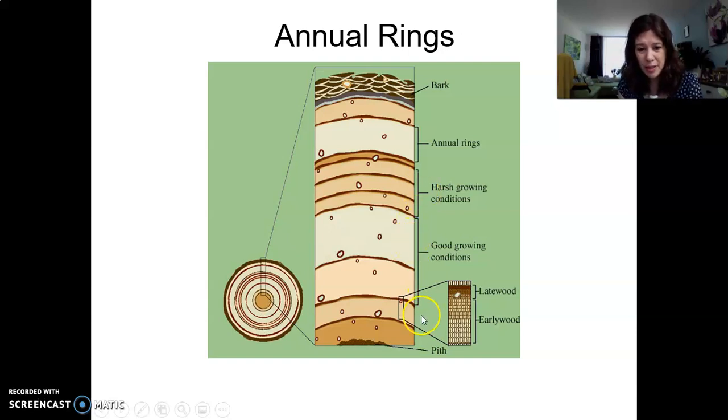So one annual ring is a light part and a dark part together. So I repeat, an annual ring is a light part plus a dark part. Now let's look at this little strip of one annual ring. As you can see, it has a light part and a dark part. And the light part is called early wood. And as you can see, it contains cells because plants of course are made of cells.